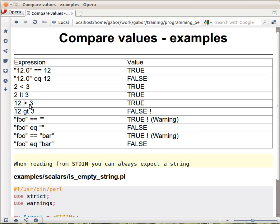If you check whether 12 is bigger than 3, that's true because the number 12 is bigger than 3. But if you check it with gt, then you get that it's false.